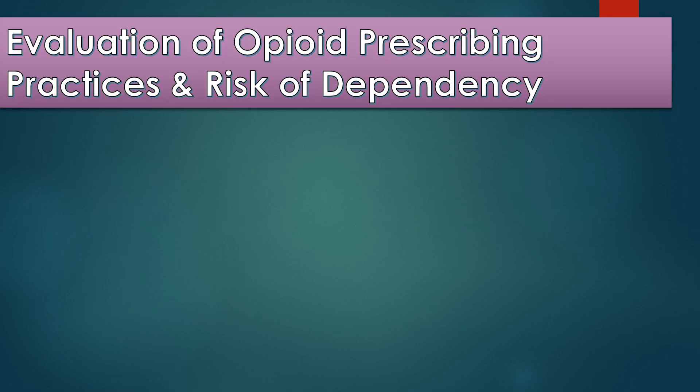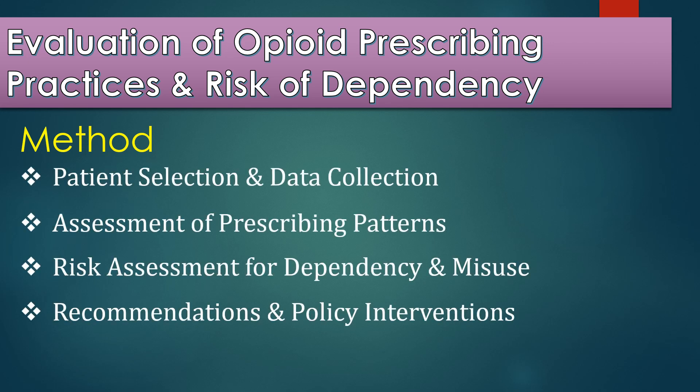Next topic: evaluation of opioid prescribing practices and risk of dependency. Opioids are powerful painkillers, but they come with a serious risk — dependency and addiction. With the opioid crisis affecting millions worldwide, researchers analyze hospital and pharmacy records to track opioid prescriptions, categorizing data by dose, duration, and patient demographics. Red flags include long-term opioid use, high-dose prescriptions, and early refills. Surveys and patient interviews help evaluate dependency symptoms, leading to safer prescribing strategies.